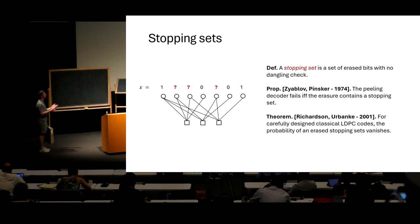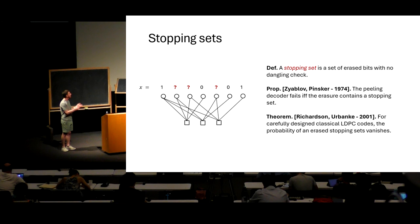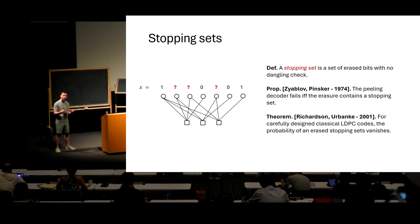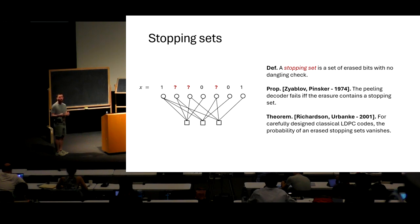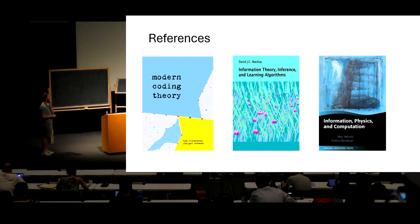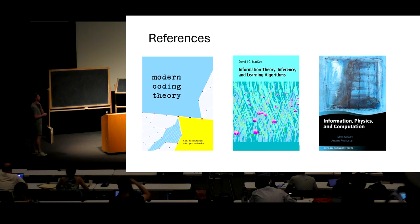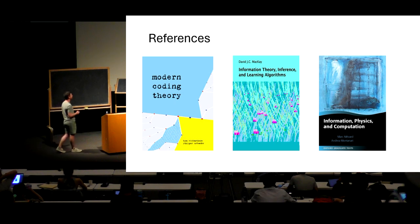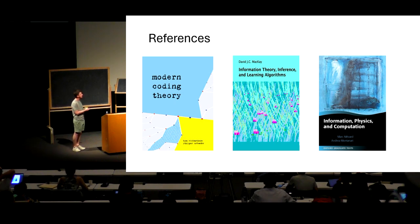Richardson and Urbanke managed to design families of codes by selecting random graphs and removing short cycles, which eliminates stopping sets. Those codes are optimal: they achieve capacity and come with a linear-time decoder. So even though the decoder sometimes gets stuck, we can design codes for which it gets stuck rarely enough. The basic idea is again to remove short cycles. For more information on classical LDPC codes and information theory and the link with statistical physics, I'll add references at the end of the lecture.